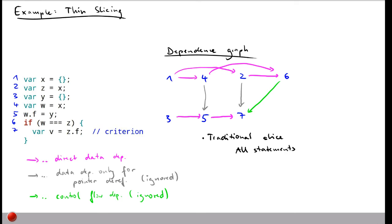In contrast, thin slicing only includes nodes that can reach node 7 using the direct data dependency edges. That means it only includes nodes 3, 5, and 7. So the thin slice consists of just those three statements, which gives you an idea of why variable v gets the value it gets, without including all the other nodes present in the traditional slice.